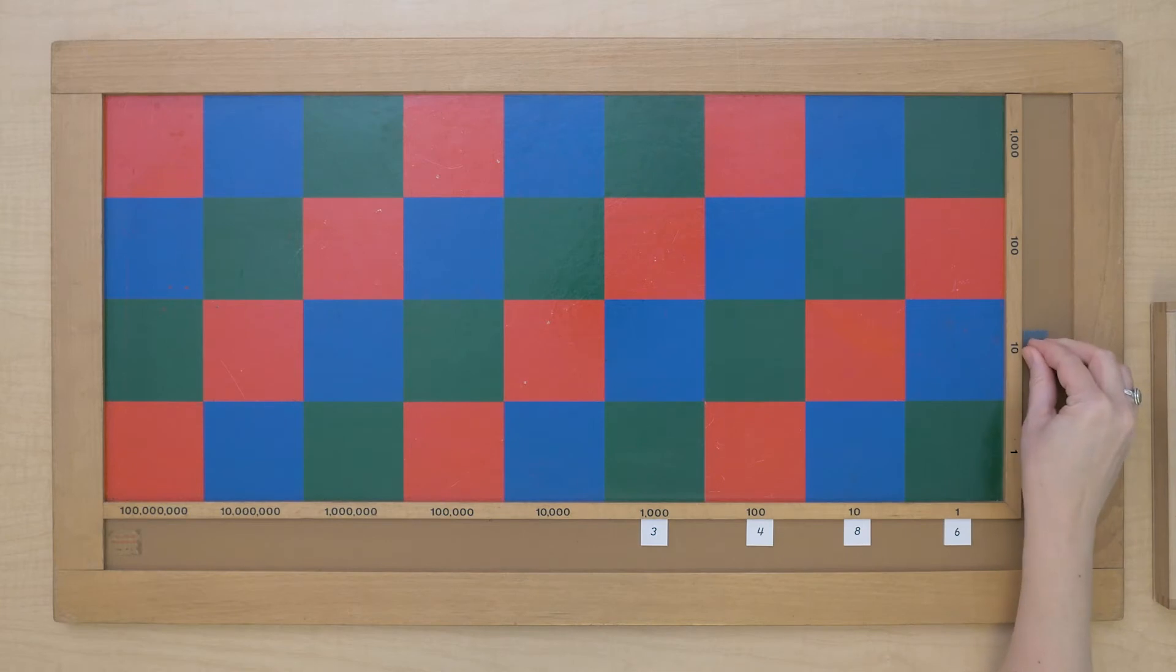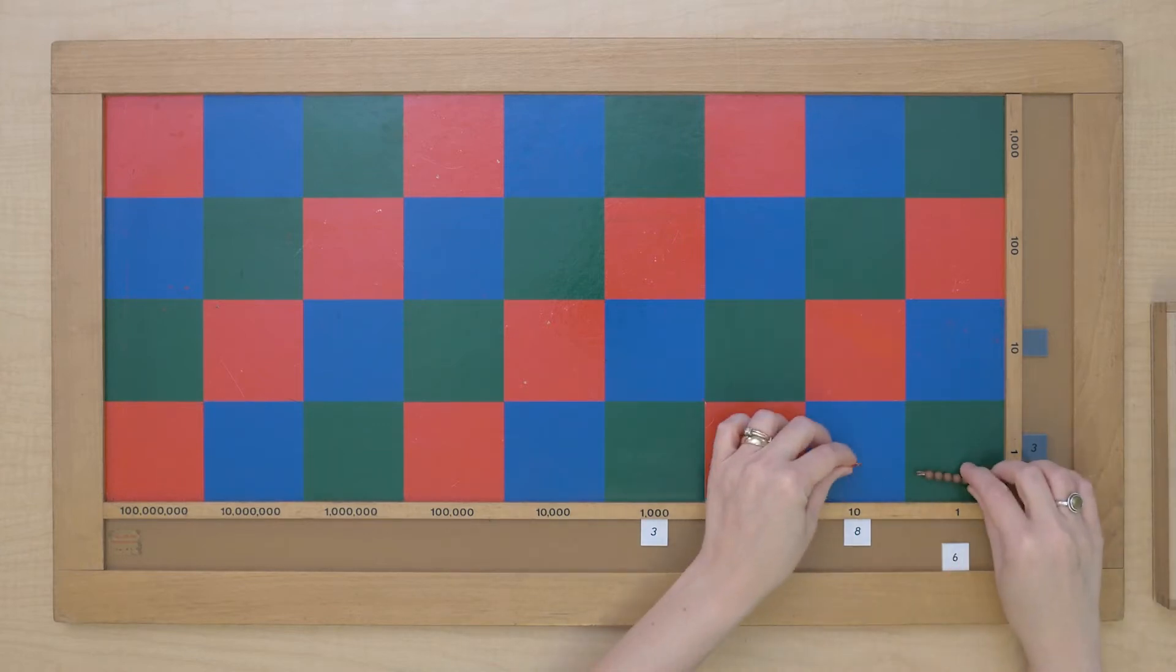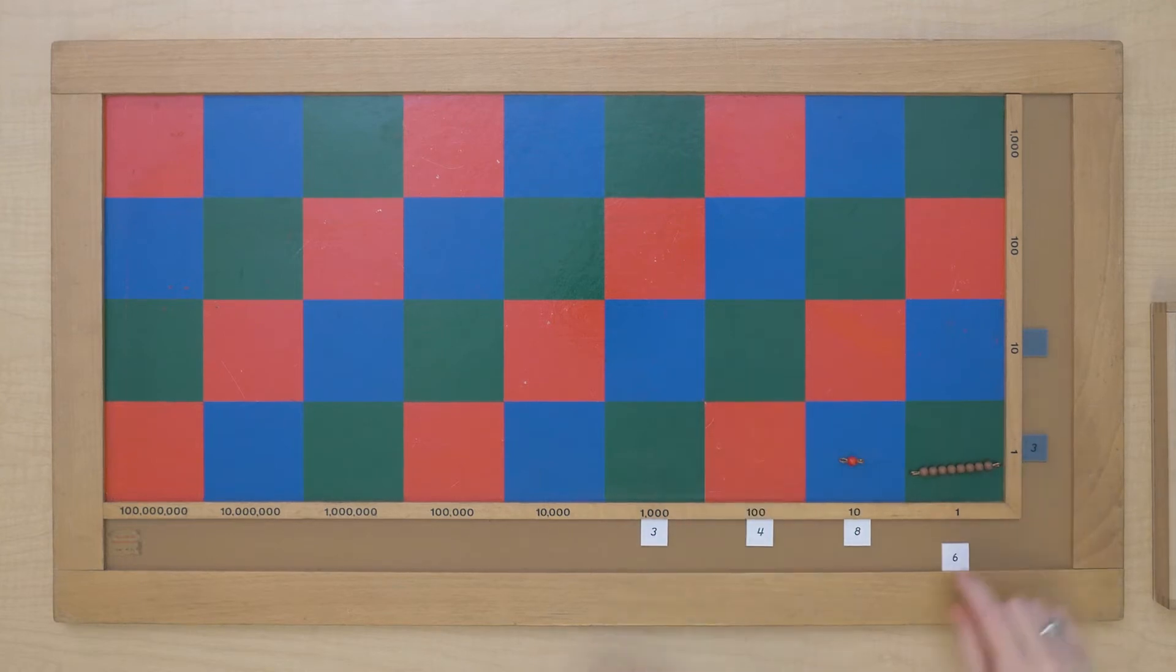So we'll start with our units multiplier. And the first multiplication we need to do is 6 times 3. Now we could get three 6 bars, but let's just think, don't we know that multiplication fact? 6 times 3 is 18. So let's just get 18. So we have 1 ten and 8 units. That's our 18.